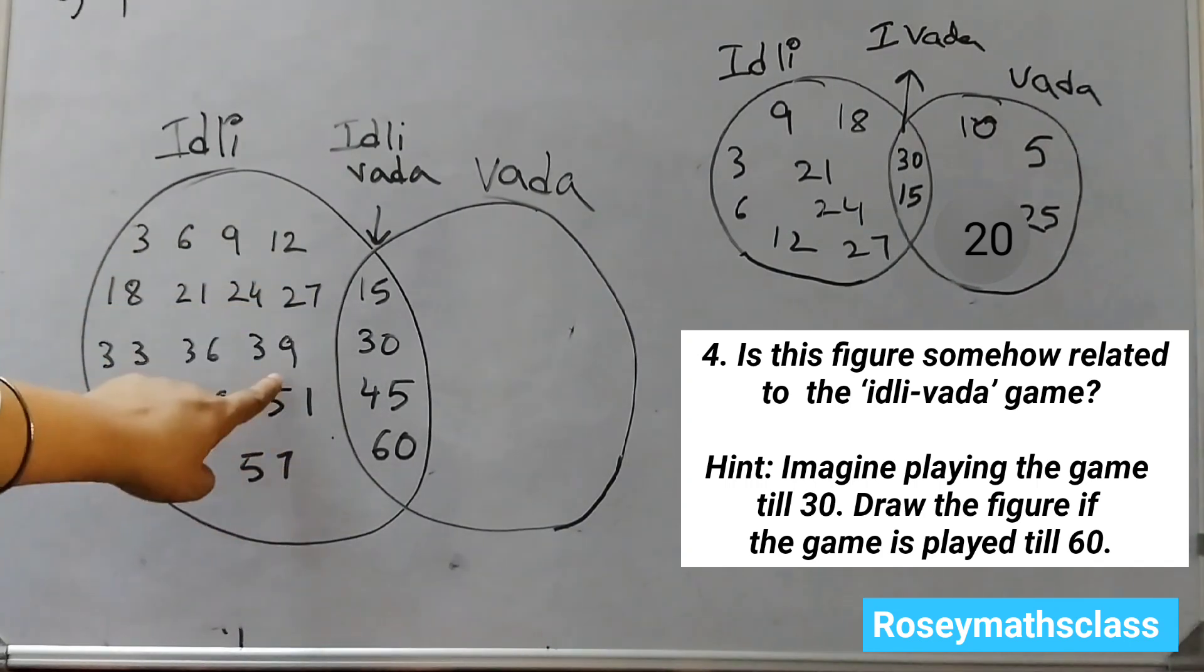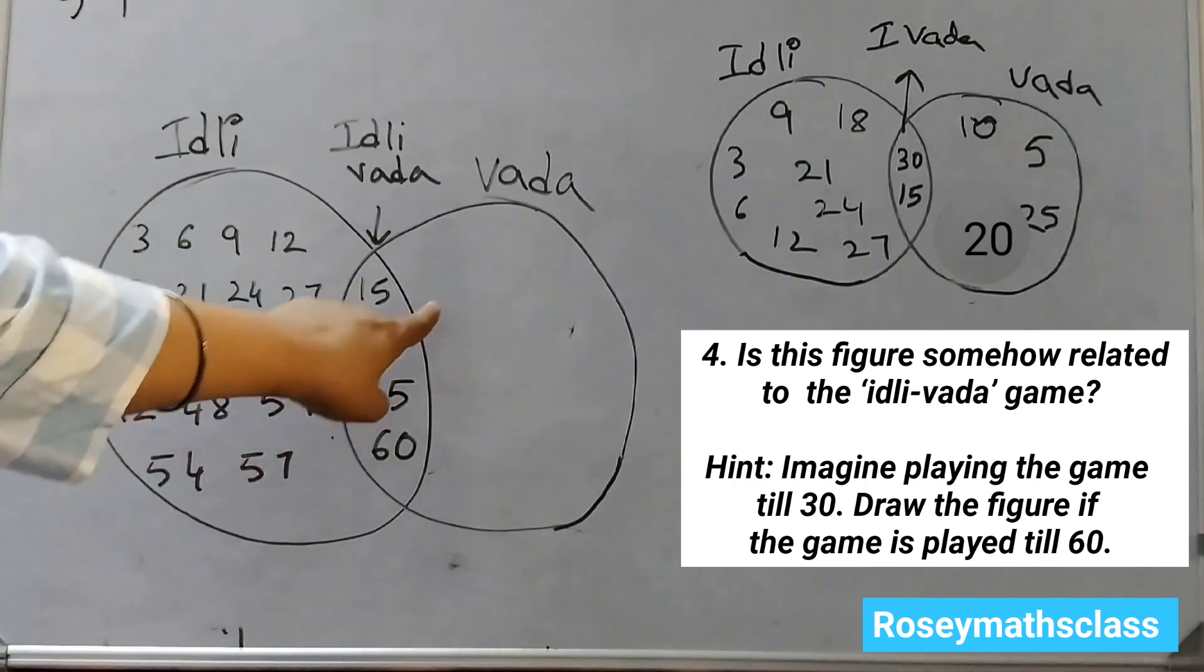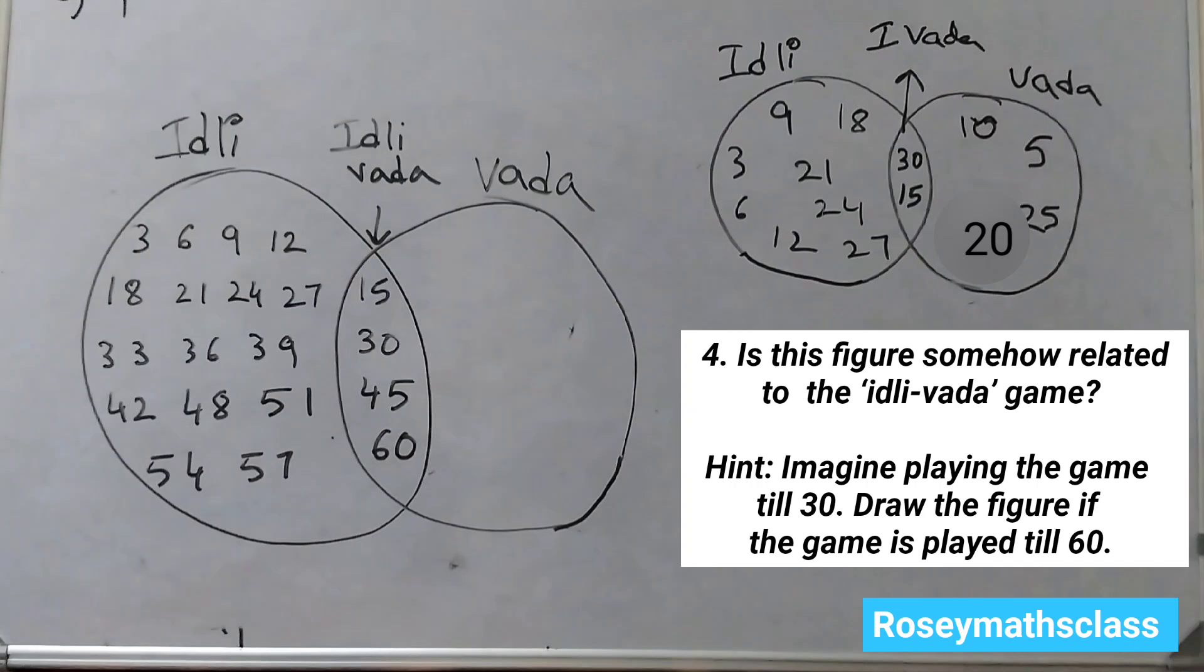So for all these numbers, the children would say Idli. This is for Idli Vada. Now we will write the multiples of 5 here.